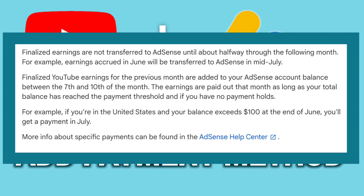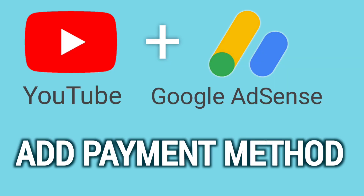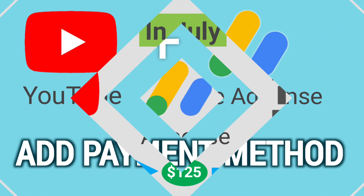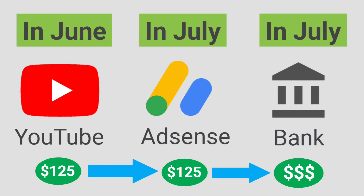For example, earnings from June will be transferred to AdSense in mid-July. Finalized YouTube earnings are added to your AdSense account balance between the 7th and 10th of the month. If you've reached the minimum payout threshold, payment is issued between the 21st and 26th of the month. So if you made $125 in June, that money will appear in your AdSense account between July 7th and 10th, and the payout to your bank account will happen between the 21st and 26th of July.